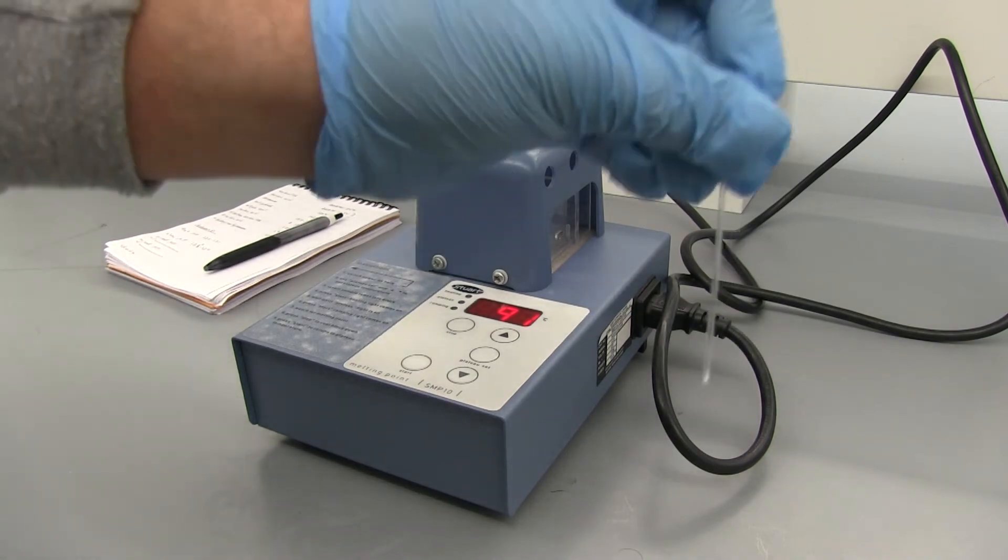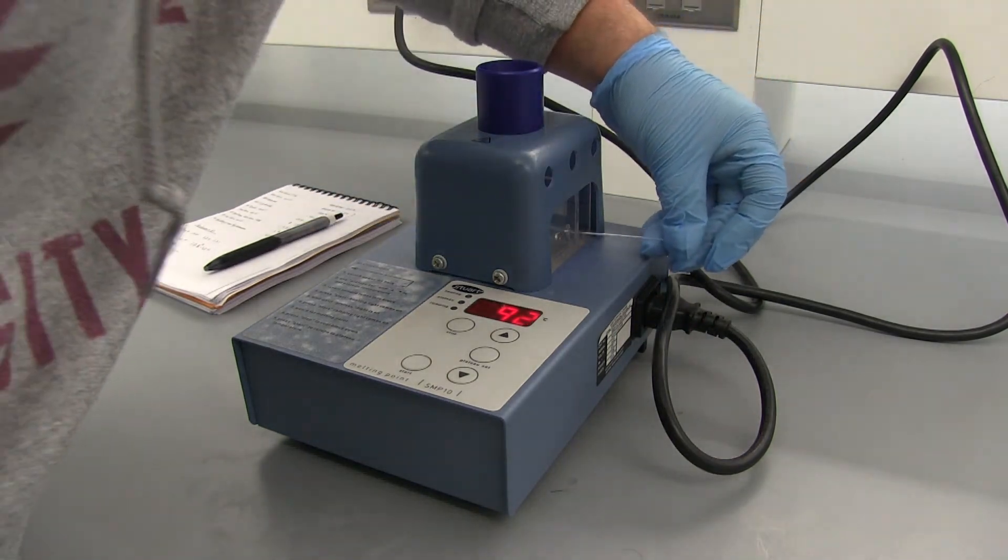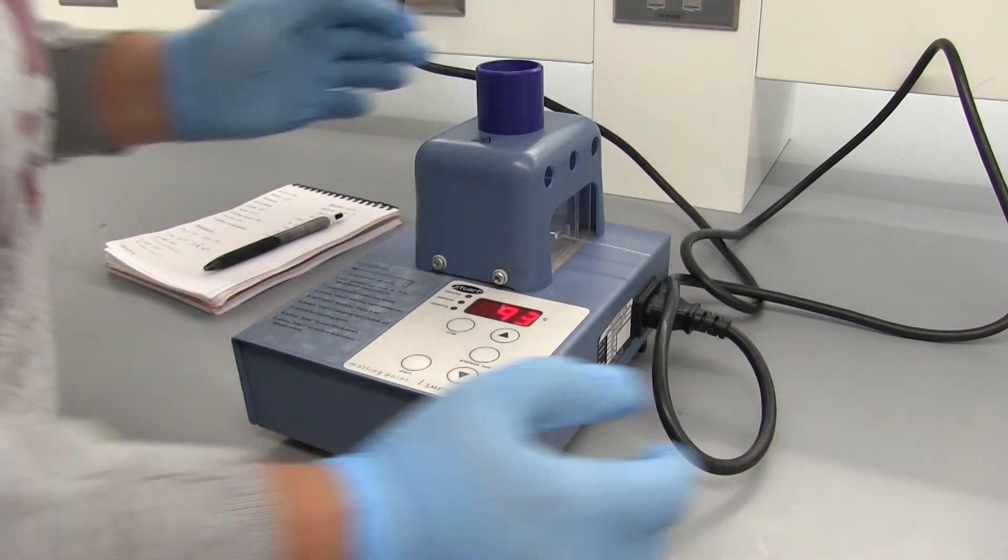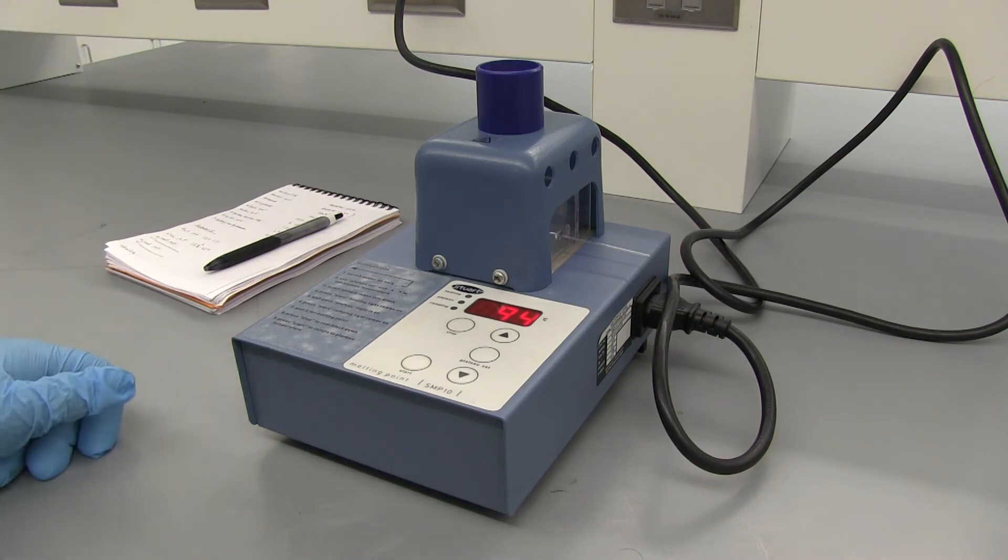Alright so I've got a mixture of benzoic acid and unknown D. We'll go ahead and put it in. If it's the same compound and the identity is benzoic acid we'll see that we get the same melting point. If it's not the same compound we'll get a lower and widened melting point.